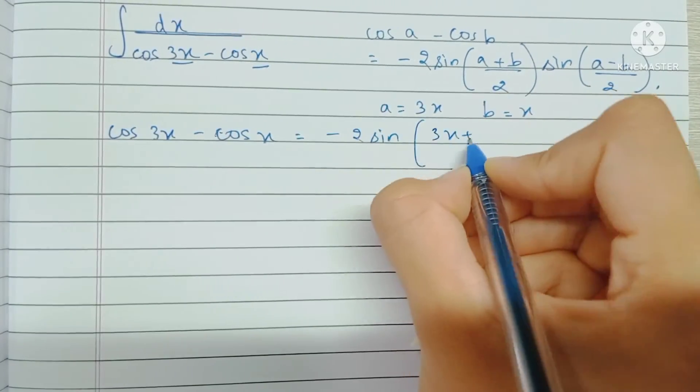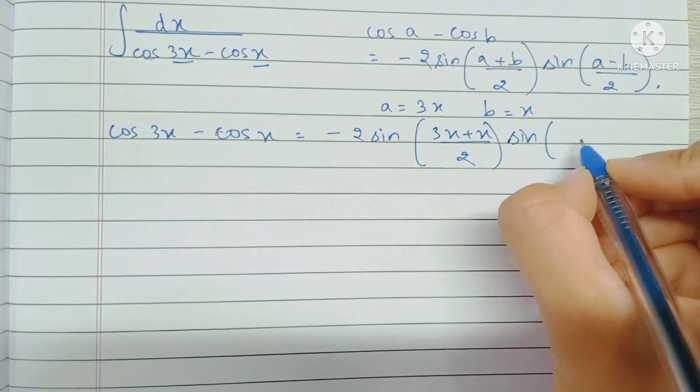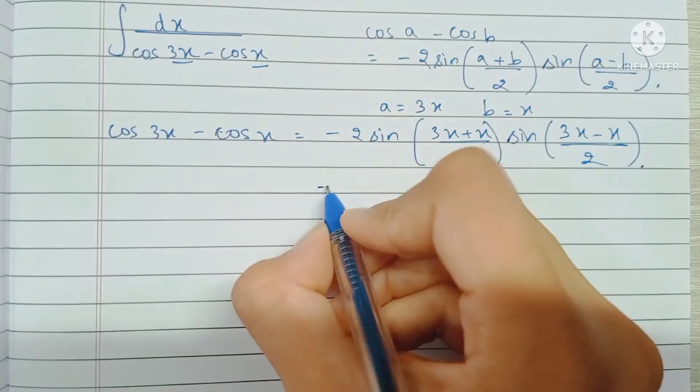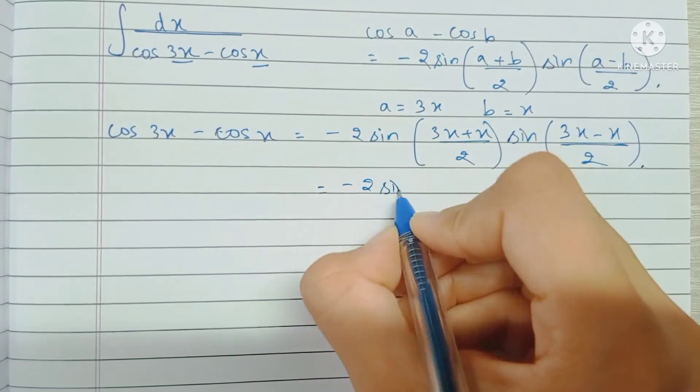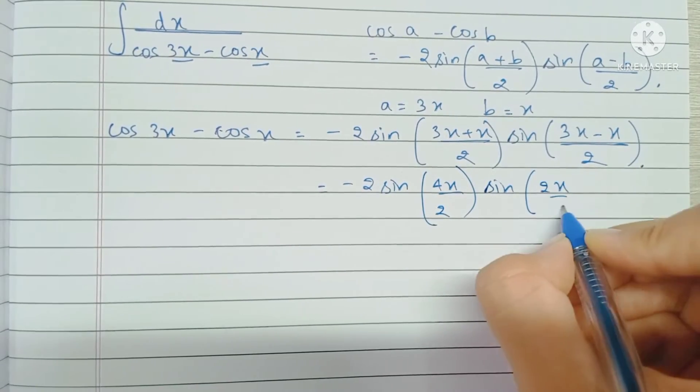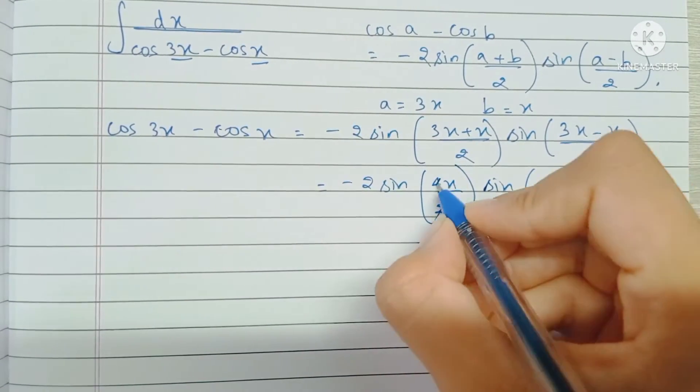This becomes minus 2 sine 4x by 2, sine 2x by 2. Of course we can cancel this out, and this becomes 2x, this becomes just x.